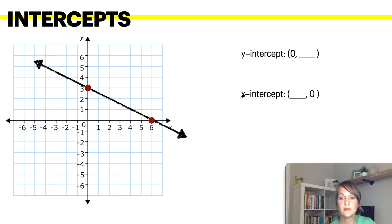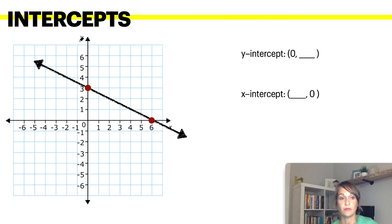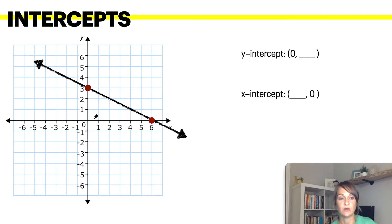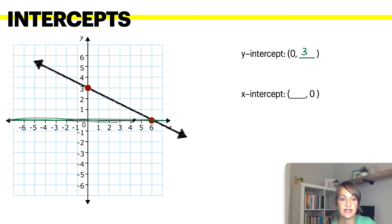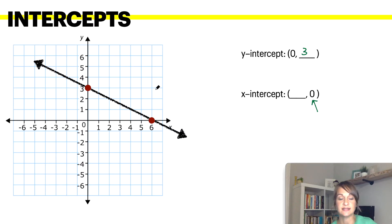Intercepts. There is a y-intercept and an x-intercept in a graph. A y-intercept is where it crosses the y-axis, which means your x value is 0, because along the entire y-axis all x coordinates are 0. It crosses here at 3, so your y-intercept is 3. Your x-intercept is along your x-axis, and along the x-axis your y value is 0. In this case, your x-intercept crosses at 6.